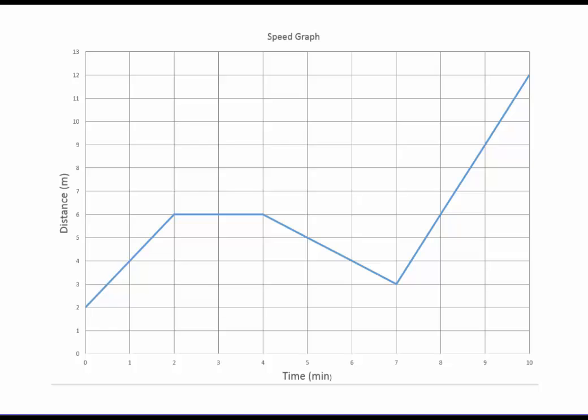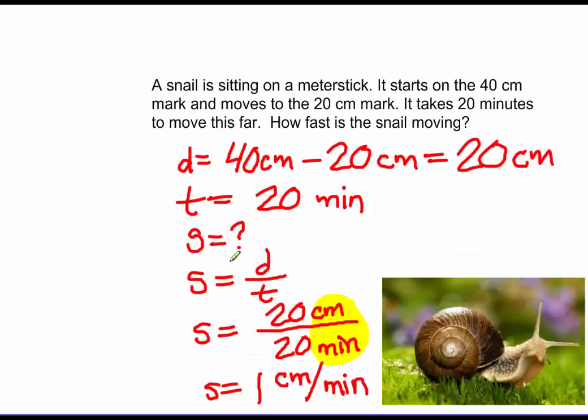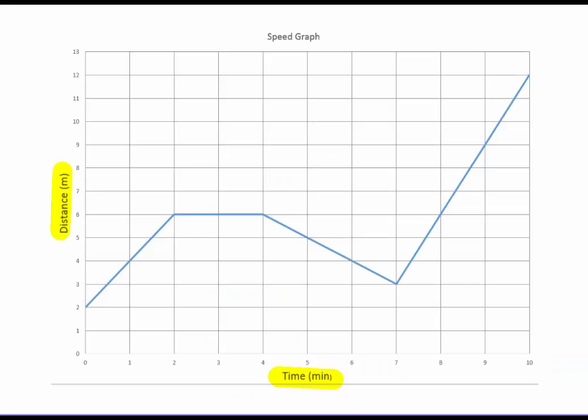One way that you're often going to encounter this data is in a speed graph, which is distance versus time. So just like we saw here in our formula, distance and time is what we're going to see here in our graph. So we can use this graph to actually calculate speed, which is why we call it a speed graph.